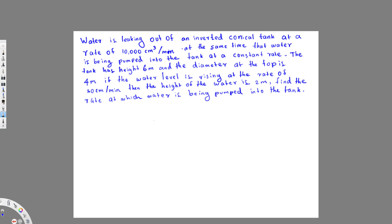We have this question: water is leaking out of an inverted conical tank at a rate of 10,000 cubic centimeters per minute. At the same time, water is being pumped into the tank at a constant rate. The tank has a height of 6 meters and a diameter at the top of 4 meters. If the water level is rising at a rate of 20 centimeters per minute when the height of the water is 2 meters, find the rate at which water is being pumped into the tank.